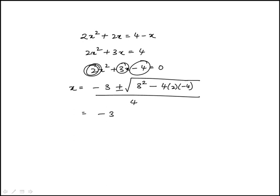So this is minus 3 plus or minus, this is 9 plus, because you have a minus and a minus here, 4 times 4 is 16, times 2 is 32.